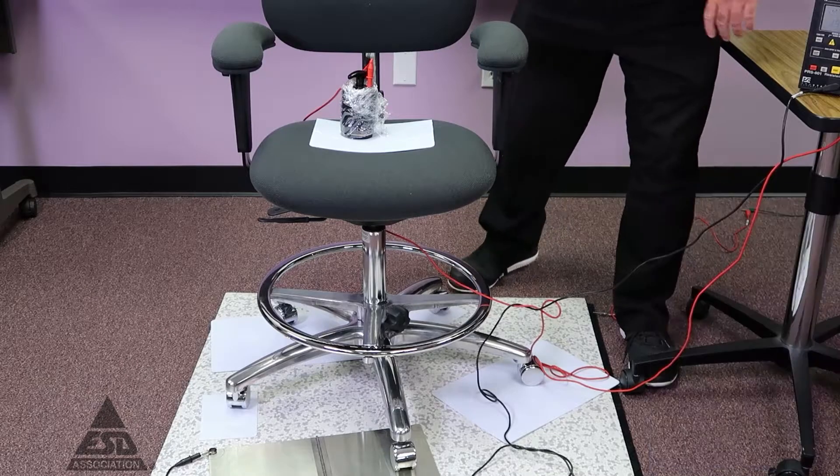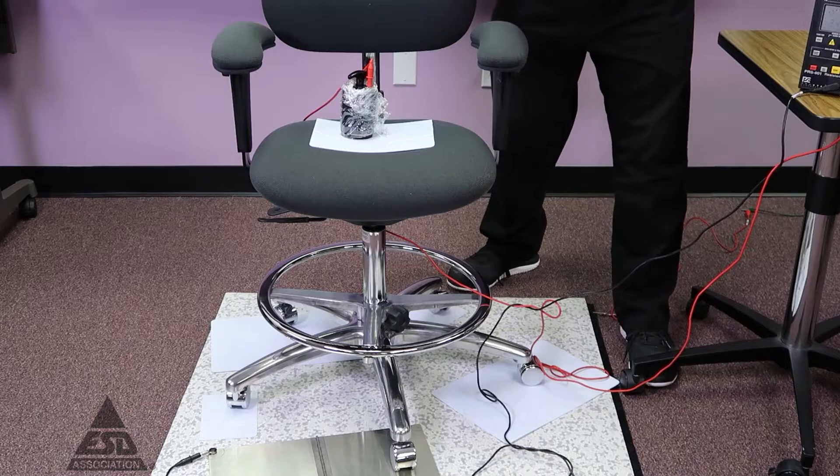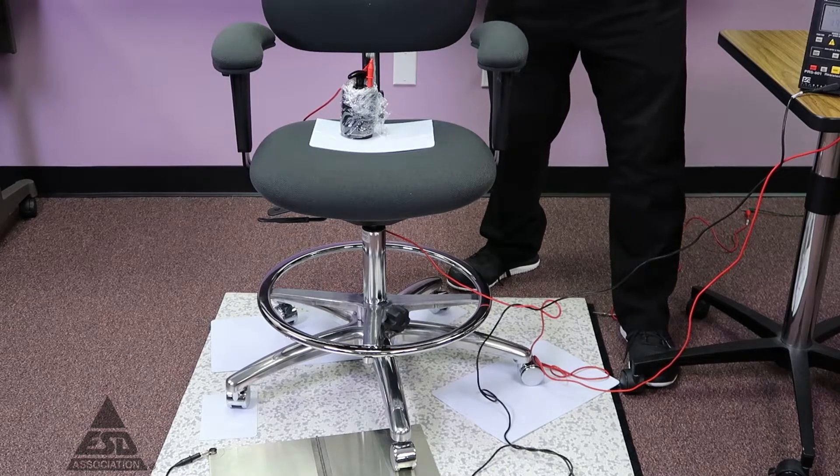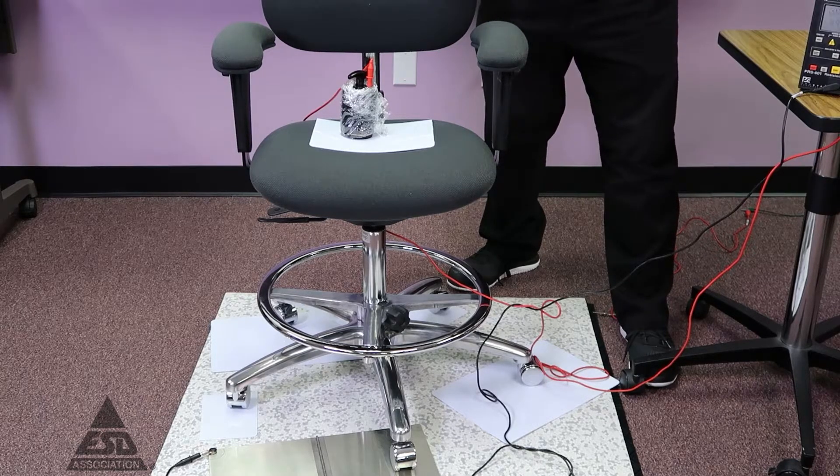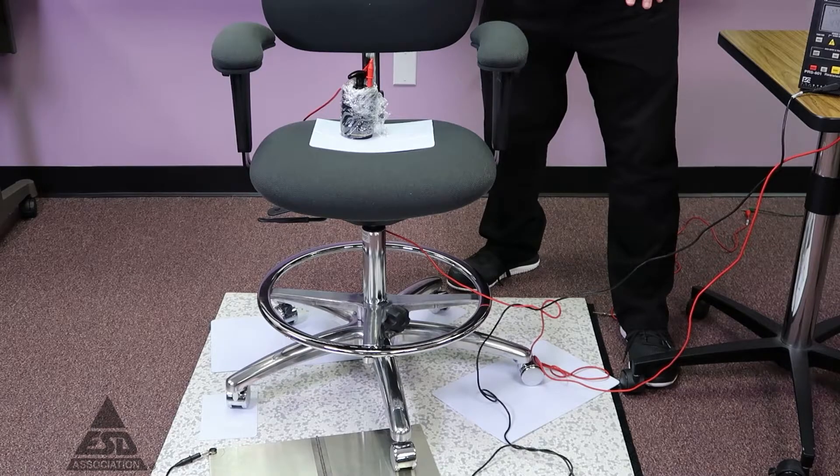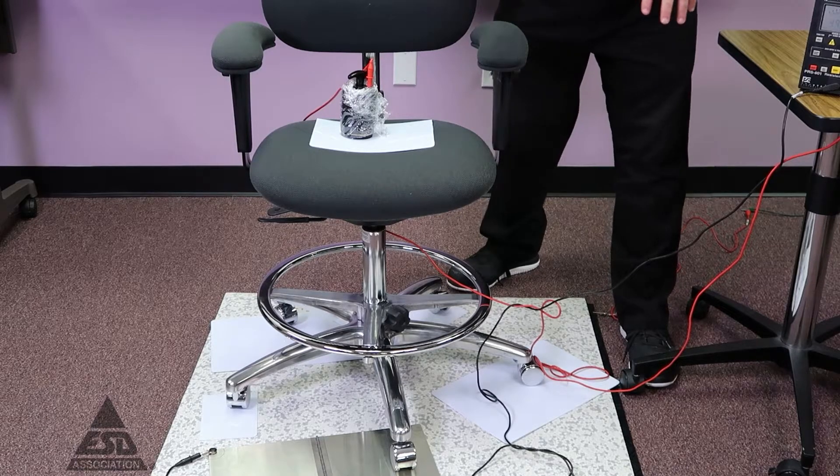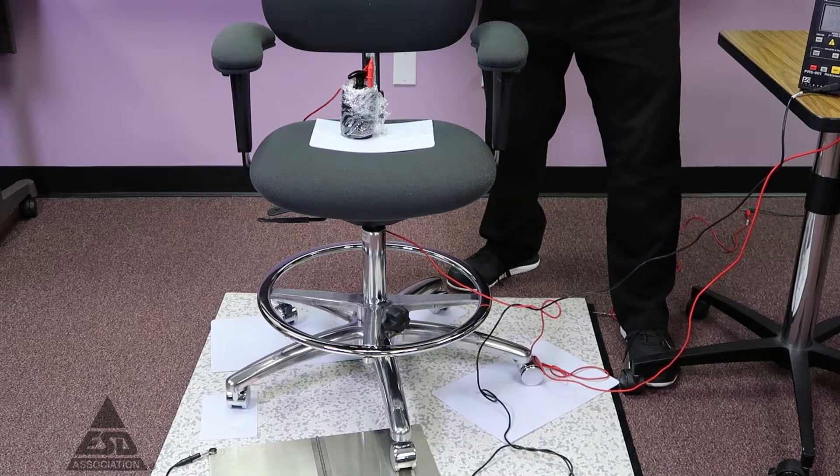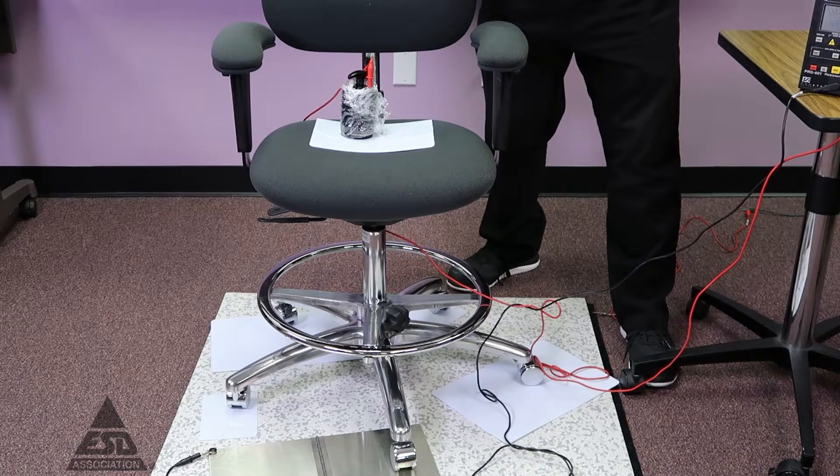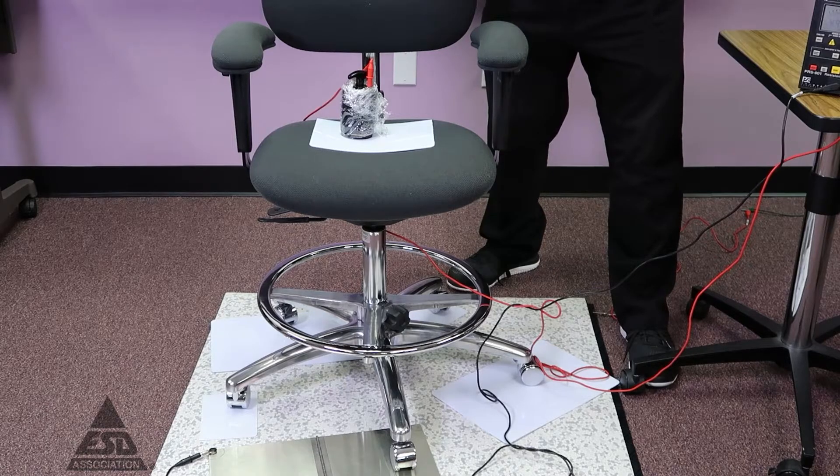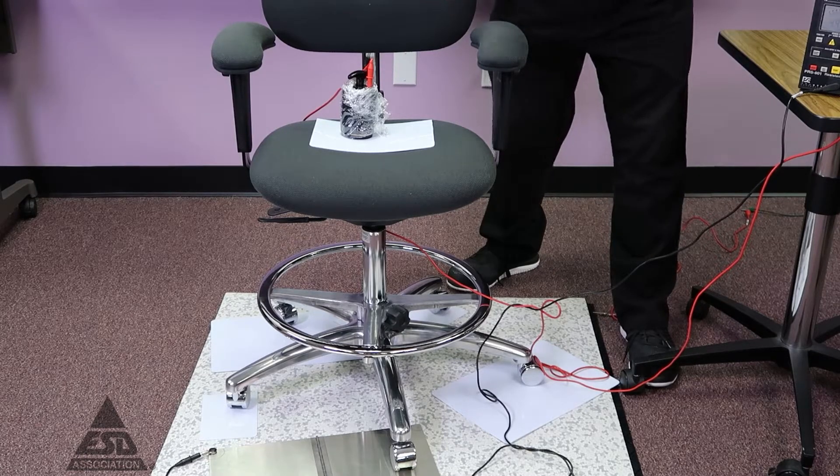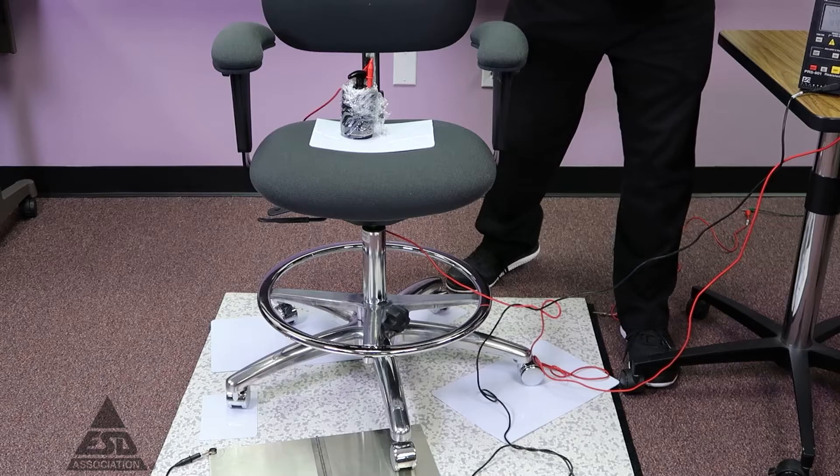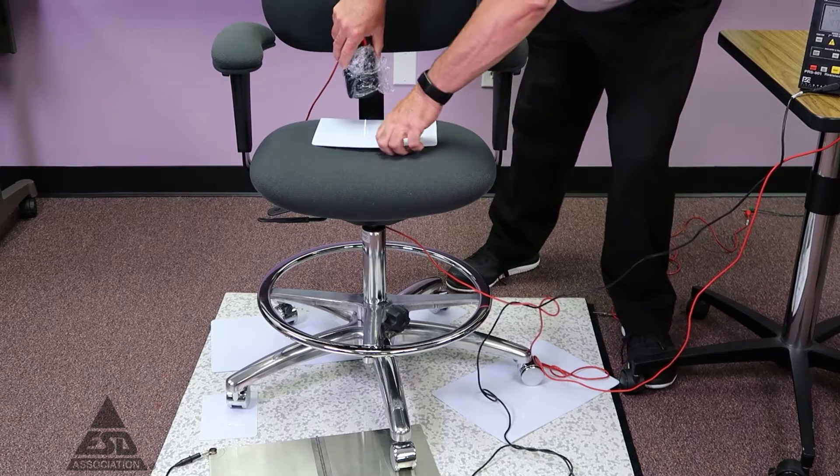So we're going to make some simple measurements. First of all on seating there are five groundable points in this particular chair. If you notice I have four of them covered with an insulator and just one with a metal plate. We've already checked to make sure that electrically all these groundable points are connected together, so we're just going to make a measurement from one of them. We'll select the one in the front. It's on a metal plate and it's connected to the meter.